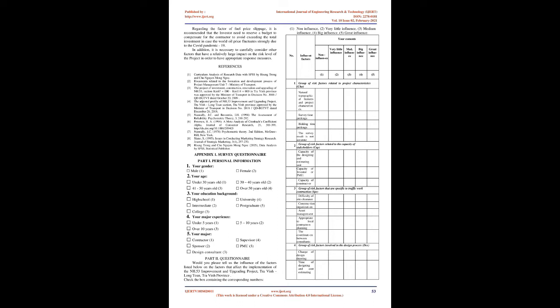Group of risk factors related to economics and legal policy: Average values of observed variables from POL1 to POL5 ranged from 2.96 to 4.17 on the 5-point Likert scale. Thus, most of the respondents agree with the criteria in this group of risk factors. The average values of POL1 to POL4 are not much different, in the range from 3.24 to 4.17, while POL5 has a value of 2.96, slightly lower than other factors. This shows that these risk factors have a relatively large impact on the Renovation and Improvement NH.53, Tra Vinh A Long Tone Section, Tra Vinh Province Project.